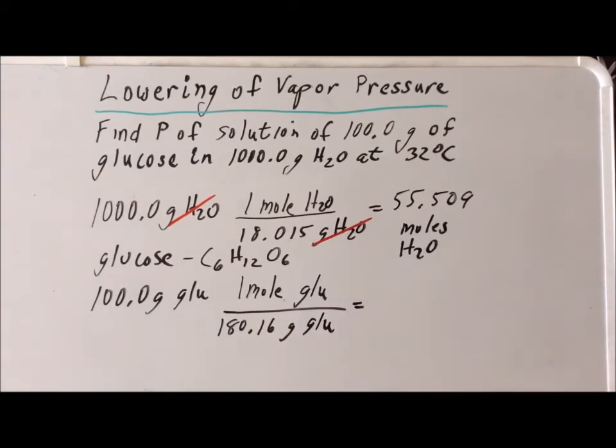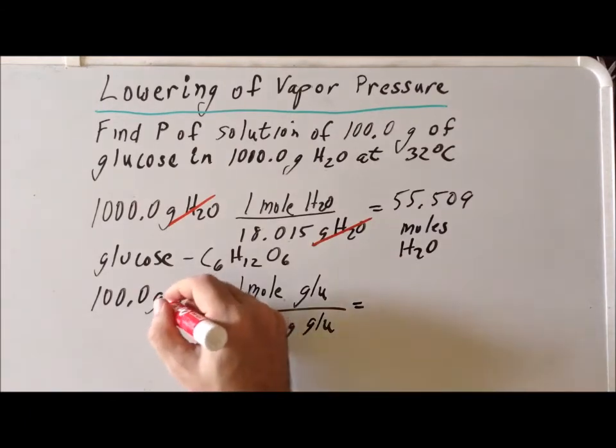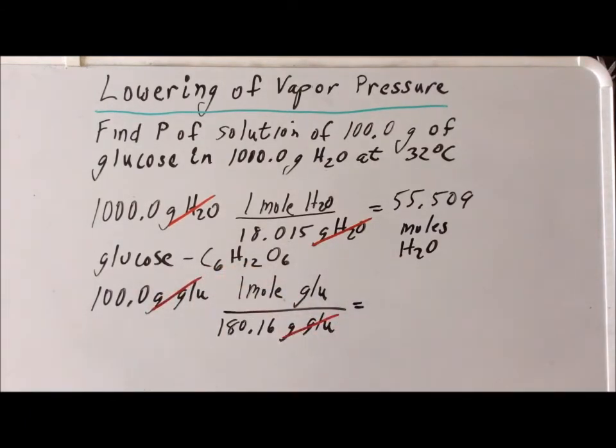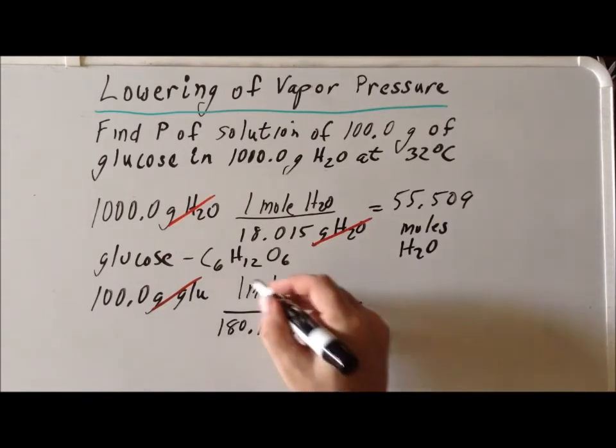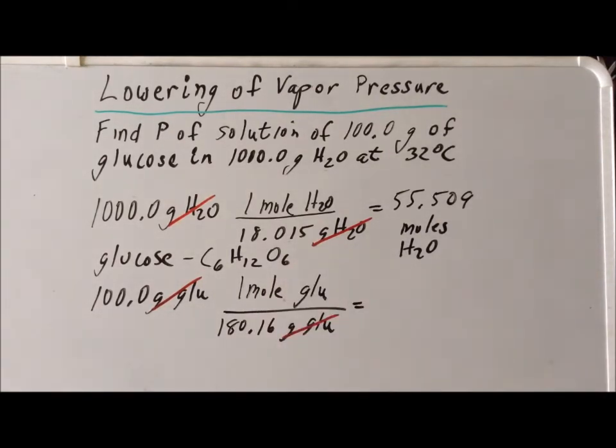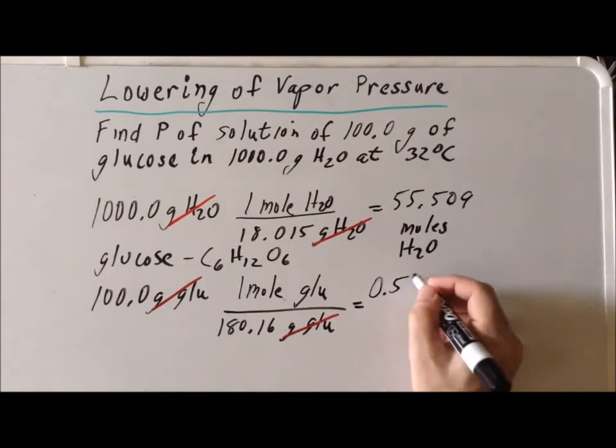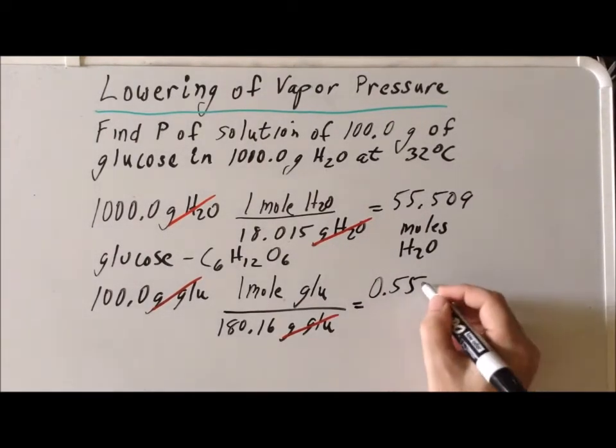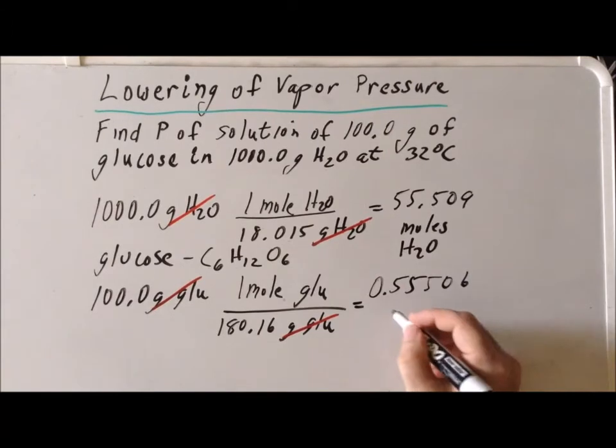Again, we always want to verify that our units cancel properly. If we do a calculation and end up with the wrong units or some bizarre units, that is a strong indication that we've performed the unit conversion improperly and should go back and double check. If we do this particular calculation, we get the proper units of moles of glucose, and we see that this equals 0.55506 moles of glucose.